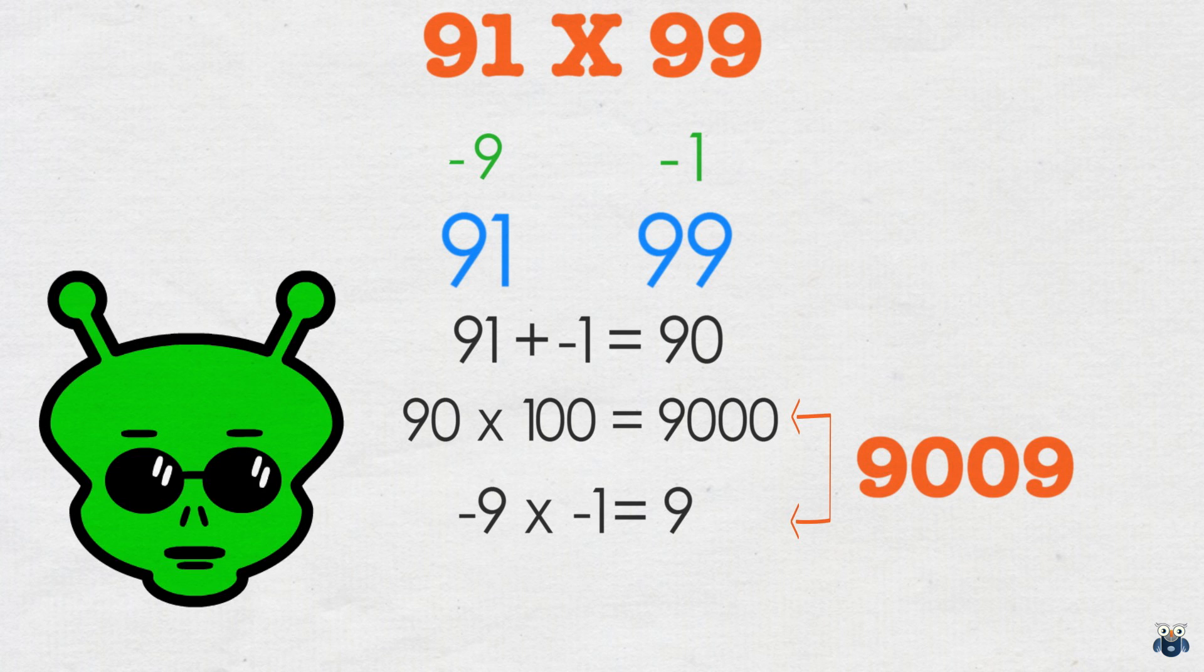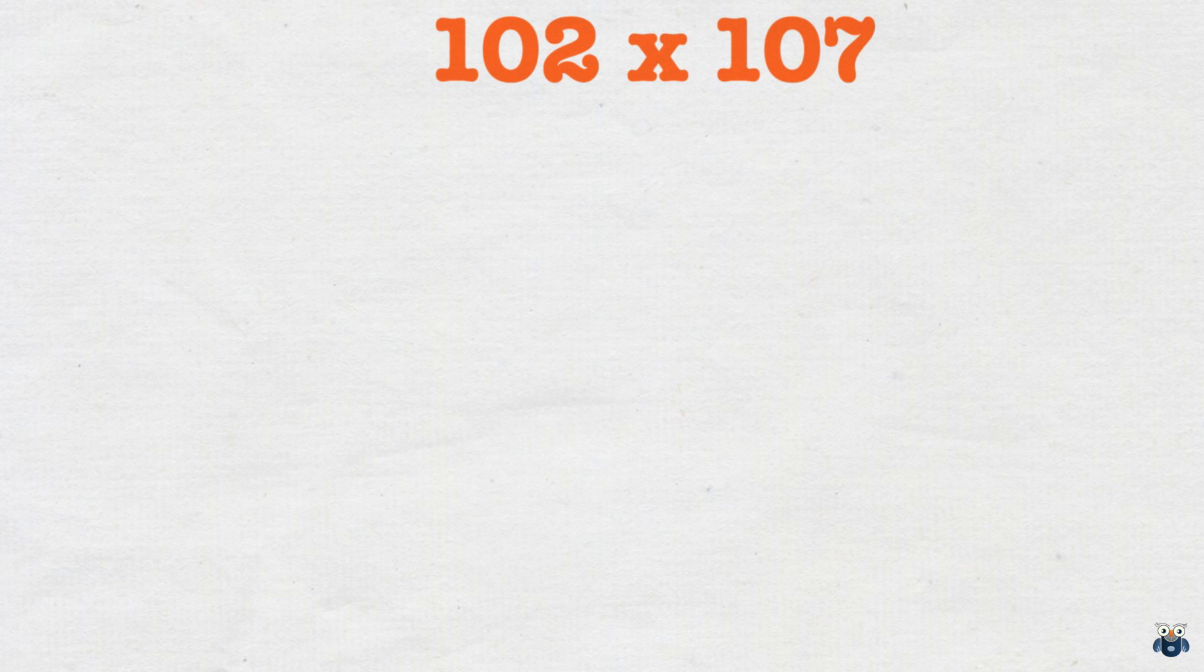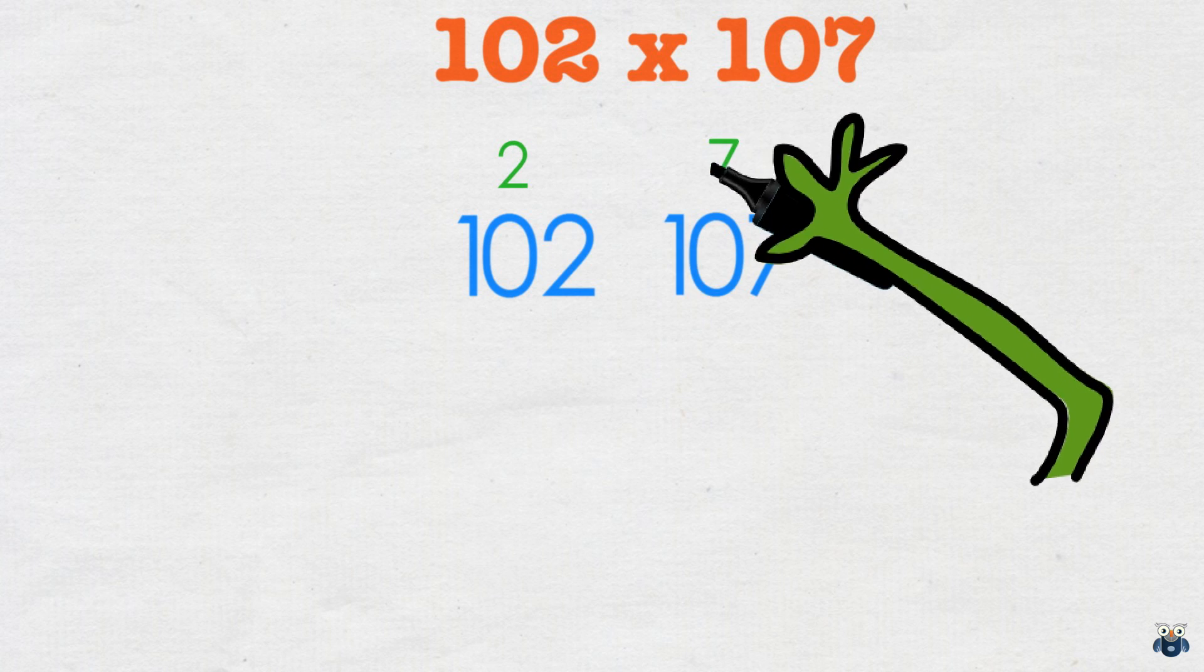That wasn't too bad was it. Okay let's try another example to revise and reinforce the concept. What is 102 times 107? 102 is 2 more than 100. 107 is 7 more. We write this down.